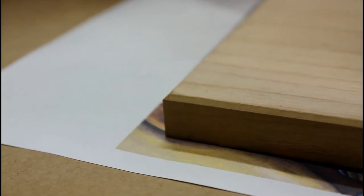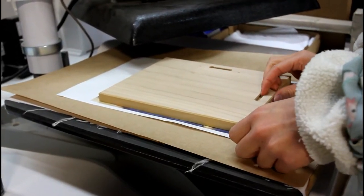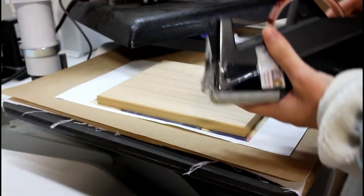Next, we apply the wood panel face down on top of the transfer paper making sure it is centered and lined up with the transfer paper image.